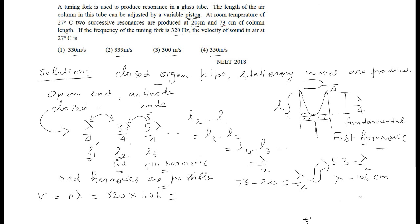When you calculate, you are getting it as 339.2 meter per second. Wavelength is 106 cm, convert into meter 1.06 because you have to divide by 100. 320 is given in the question because it is in resonance with the tuning fork whose frequency is 320 Hz. So, 339.2 meter per second.